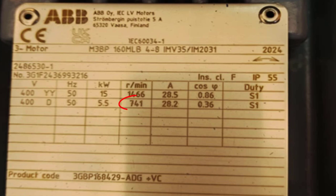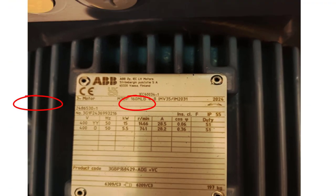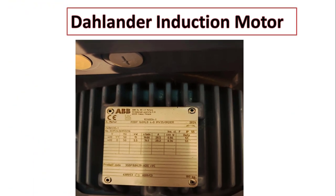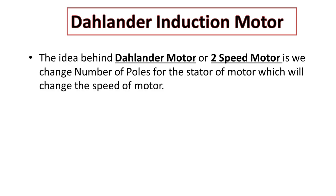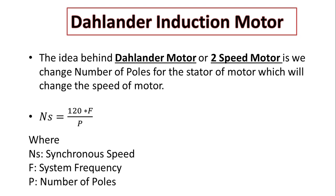Actually, the idea behind this motor is when we change the connection, we change also the number of poles in the stator of the motor. Here in this formula, as you can see, the synchronous speed Ns is equal to 120 times the frequency over number of poles.